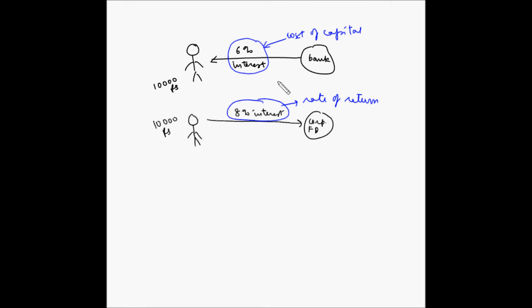So, let us distinguish these rates of return by using different symbols. For cost of capital, let us use K, whereas for rate of return, we will use R.